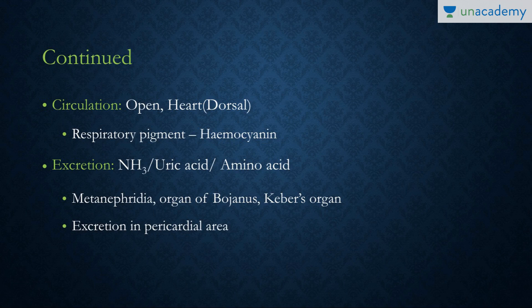They have a dorsal heart, in contrast to chordates which have a ventral heart. Their respiratory pigment is hemocyanin. The excretory products can be ammonia, uric acid, or amino acids. The organs of excretion are Keber's organ, the organ of Bojanus, and the metanephridia.